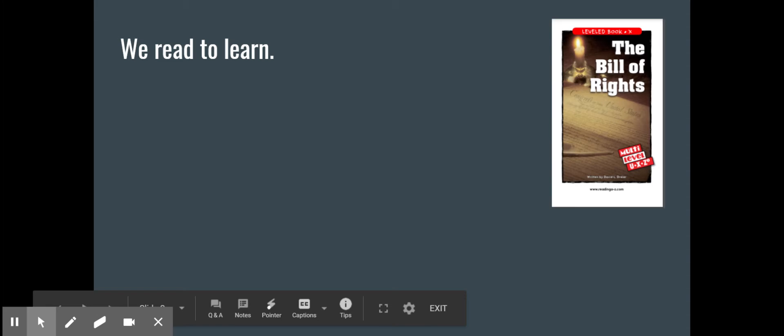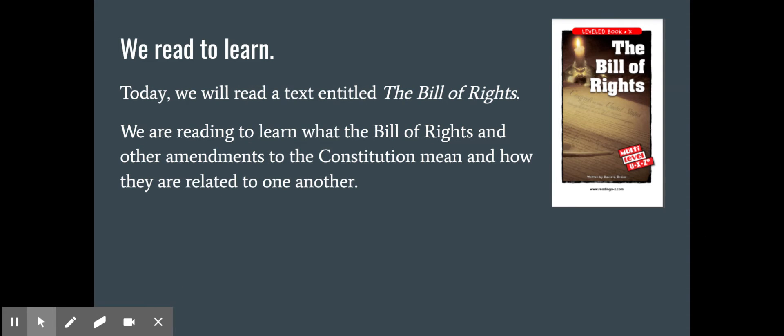All right so of course we know that we read to learn. Today we're going to be reading this text from Reading A to Z entitled The Bill of Rights and we're going to be reading to learn what the Bill of Rights and other amendments to the Constitution mean and how they're related to one another.